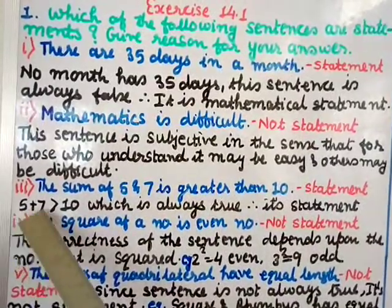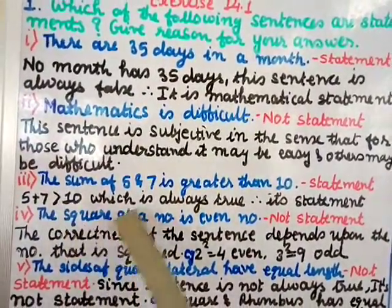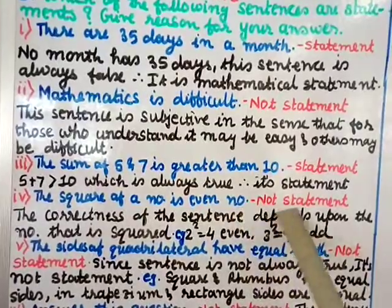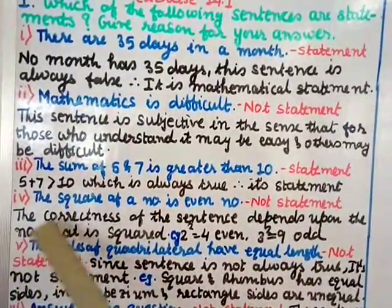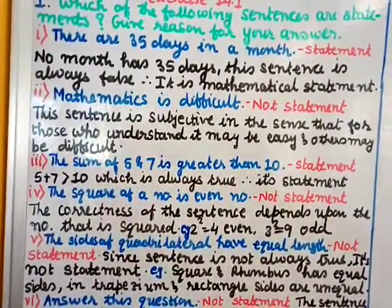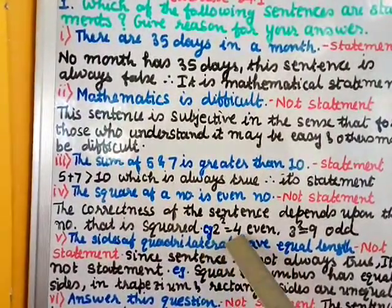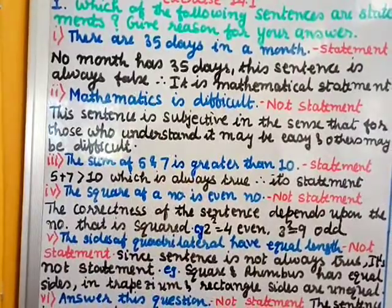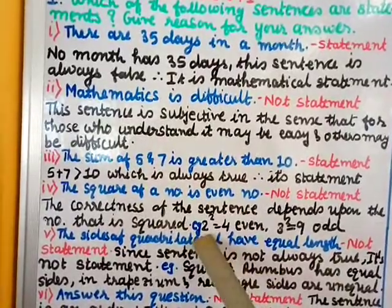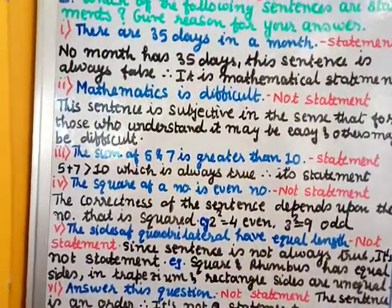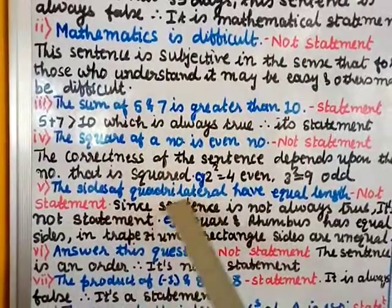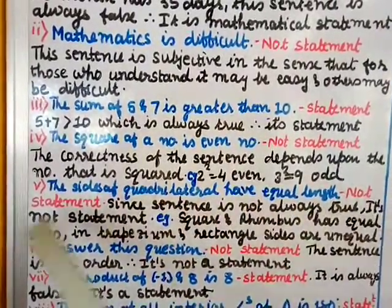Roman numeral three: 'The sum of five and seven is greater than 10' — this is a statement. Five plus seven is always greater than 10, so it is always true. Roman numeral four: 'The square of a number is an even number' — this is not a statement, because the correctness depends on the number being squared. For example, 2 squared equals 4, which is even — true. But 3 squared equals 9, which is odd — false. So it can be both true and false, therefore not a statement.